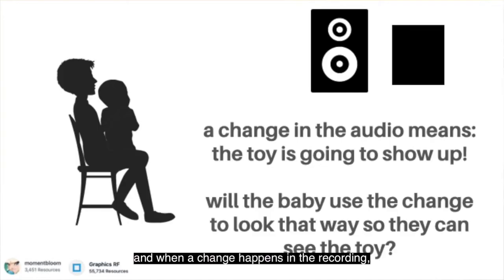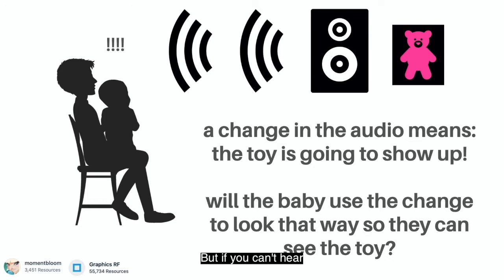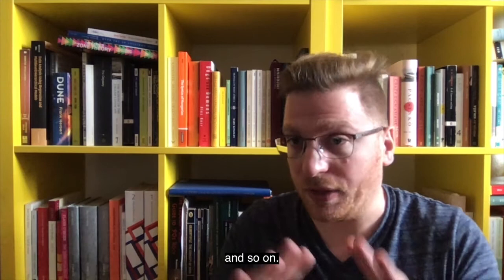So how do we use that to find out if a baby knows the sound repertoire of a native language? There's a loudspeaker in a room slightly to the baby's side playing a scene for cells recording, and when a change happens in the recording, a shiny toy lights up for a moment next to the loudspeaker. If you're the baby, you want to use the change as your cue to look at the shiny toy because shiny toys are great. But if you can't hear the change, you can't anticipate anything, so you won't turn your head.